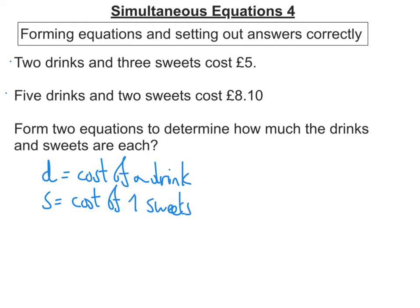So then literally I just make 2 equations with it. So I know that 2 drinks are 2D, add 3S, 3 sweets, and that costs £5. So equal to 5. The second equation, 5 drinks and 2 sweets cost £8.10. So 5 times the cost of a drink plus 2 times the cost of sweets is equal to £8.10. So there's my 2 equations and then I can solve them as shown by my previous videos.